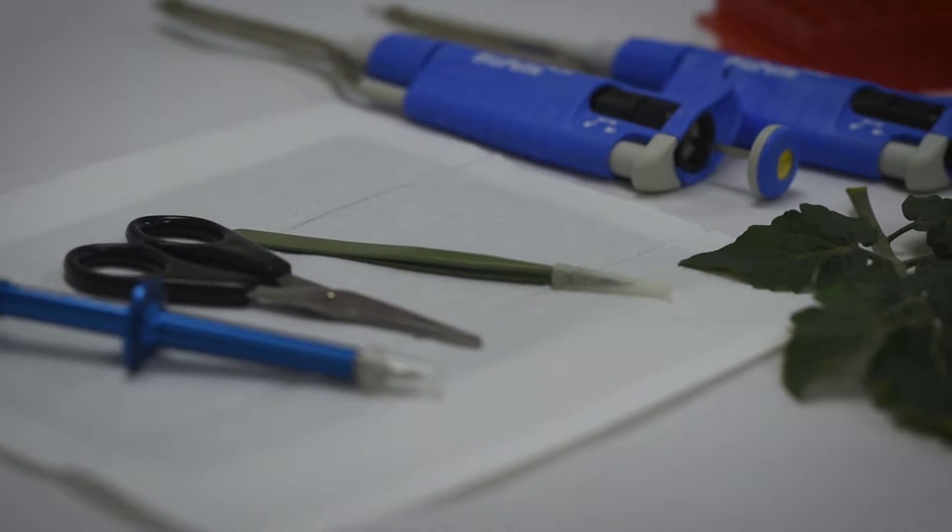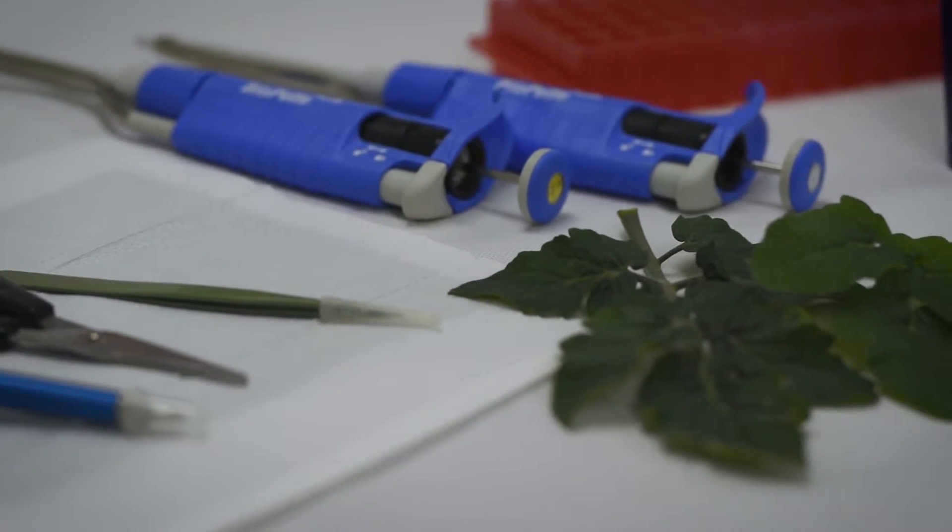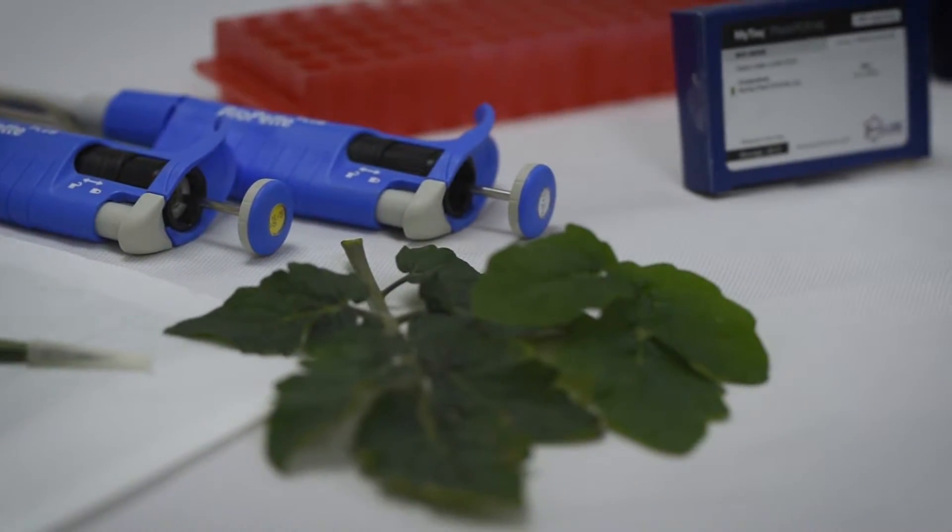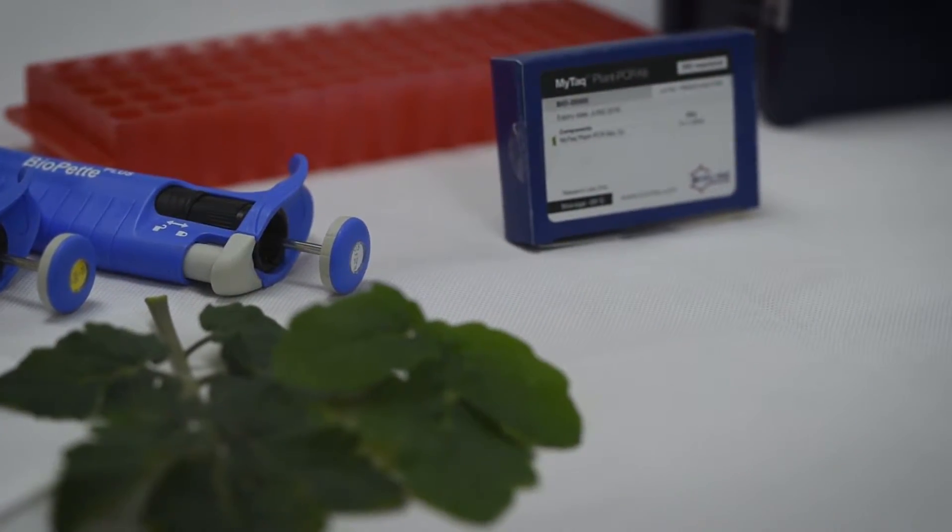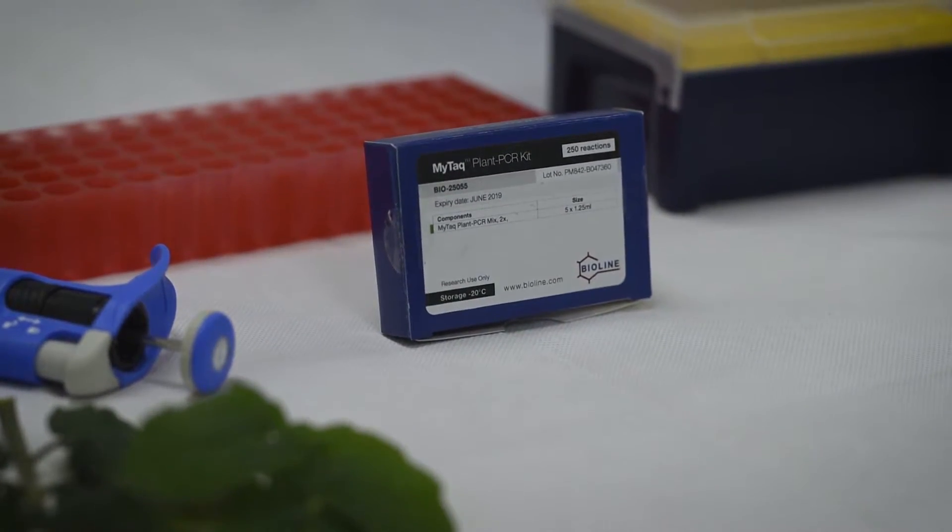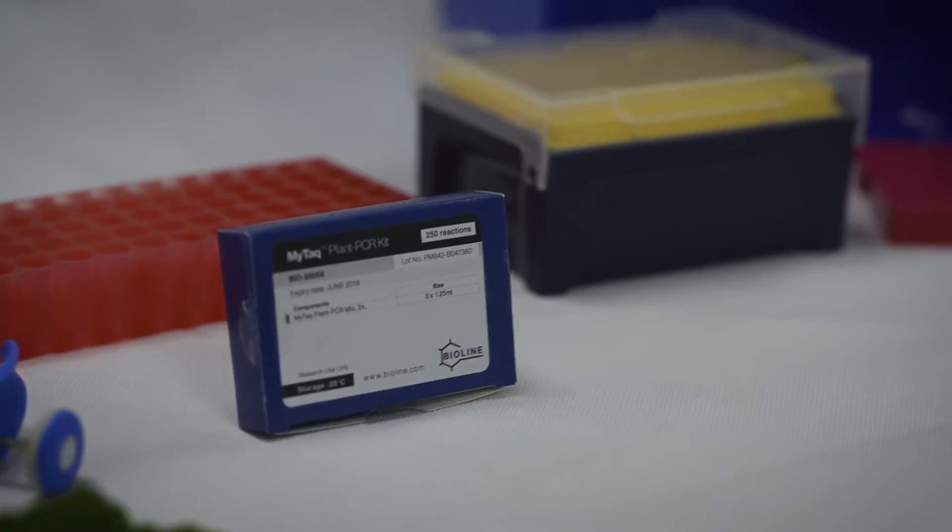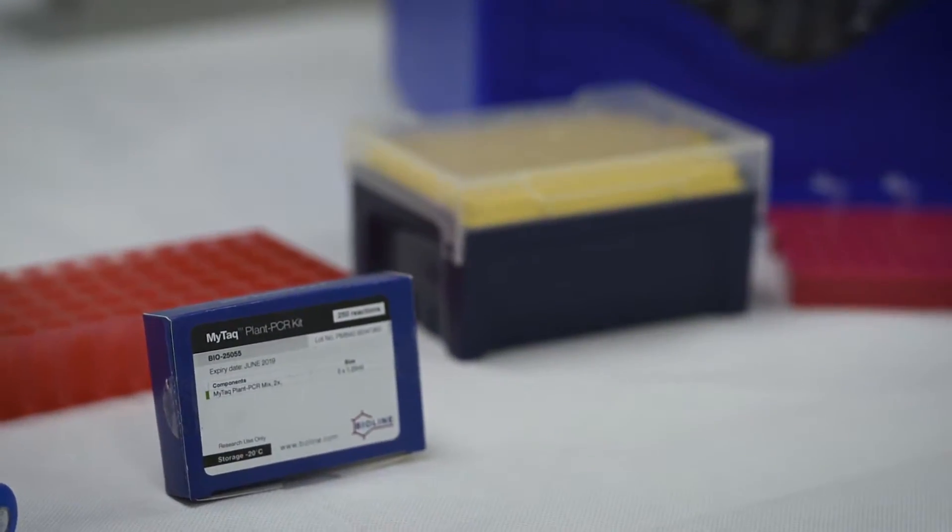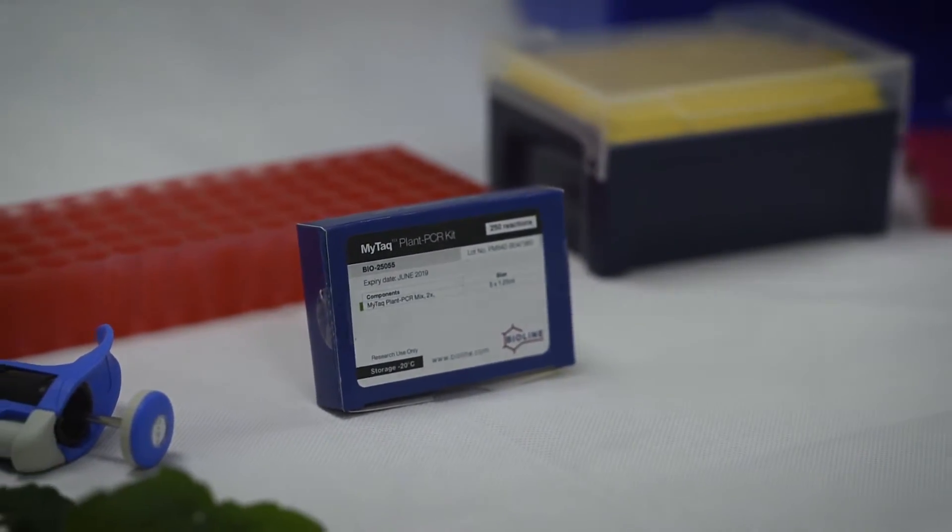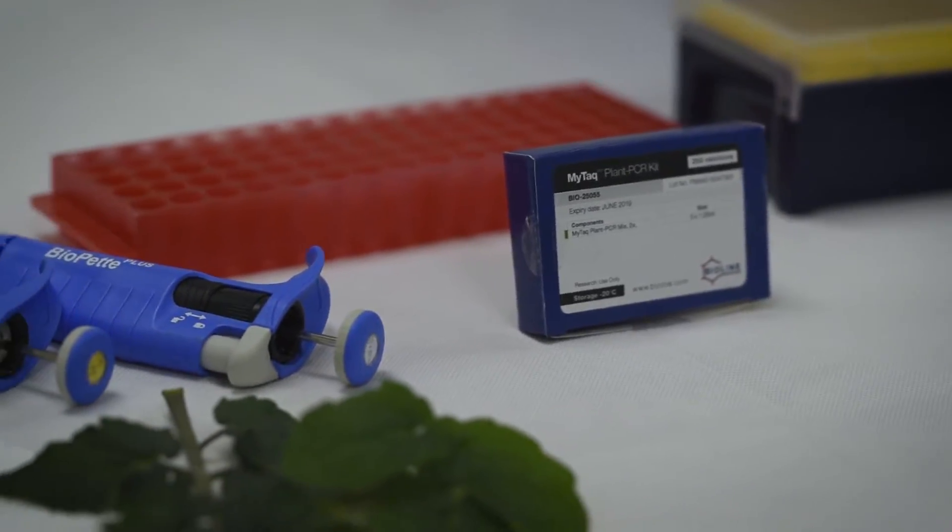You will need your plant, a 1.2 mm leaf punch or a sharp scalpel blade or scissors. You will also need tweezers, PCR tubes, pipettes with filter tips, a PCR machine, forward and reverse primers, water, and at the end of it an agarose gel, buffer, and DNA ladder to run the product out on.